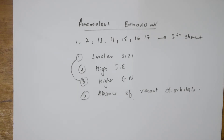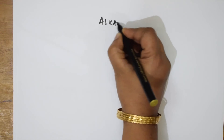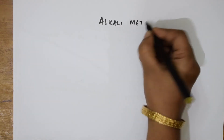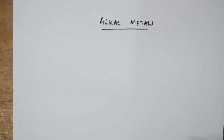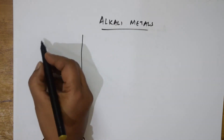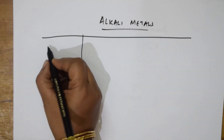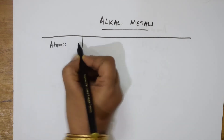Now let's look at the important properties of alkali metals during exams. S-block includes alkali metals and alkaline earth metals. Let's make a column and remember all the properties at a stretch. In group 1 — lithium, sodium, potassium, rubidium, cesium, francium — the first property is atomic and ionic radii.